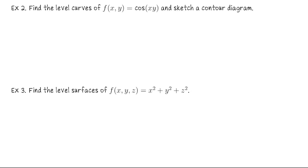Let's find the level curves for the function of two variables f of x and y equals cosine of xy and then we'll sketch a contour diagram. First we imagine that we fixed a constant c. What points x and y would satisfy that cosine of xy equals the same constant c?